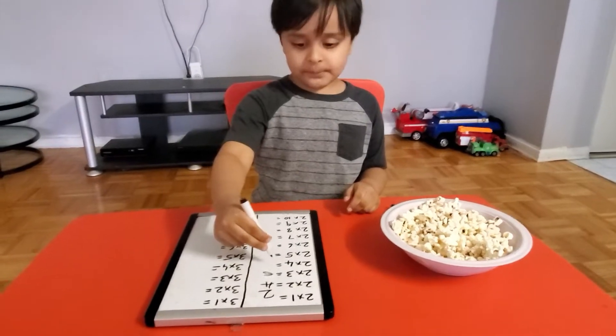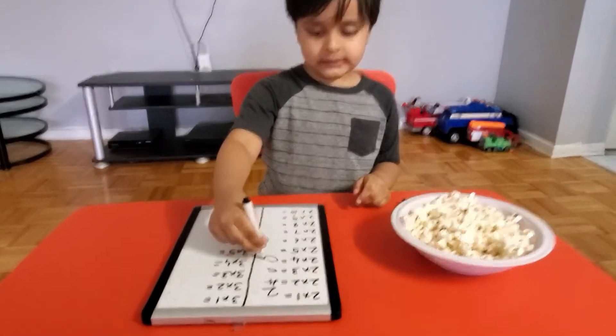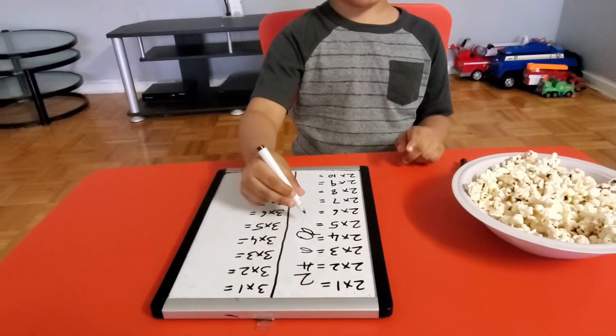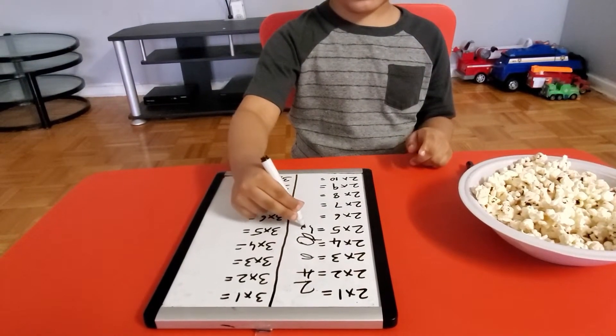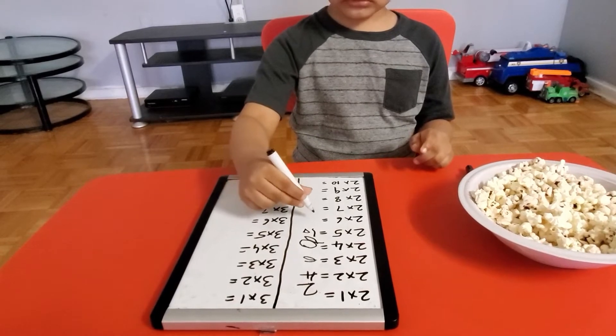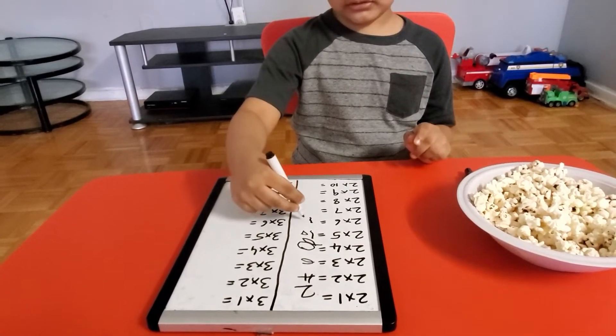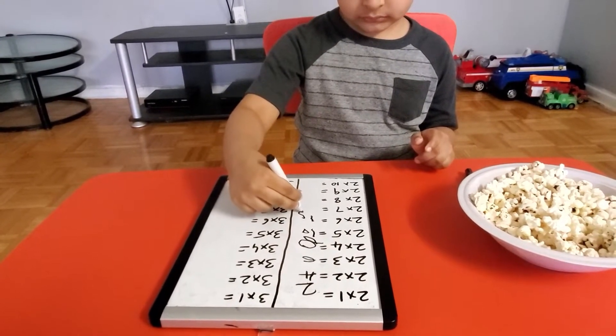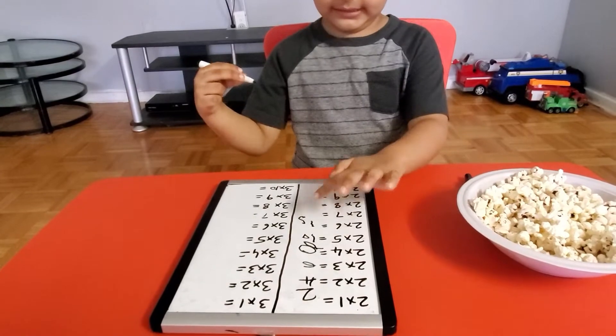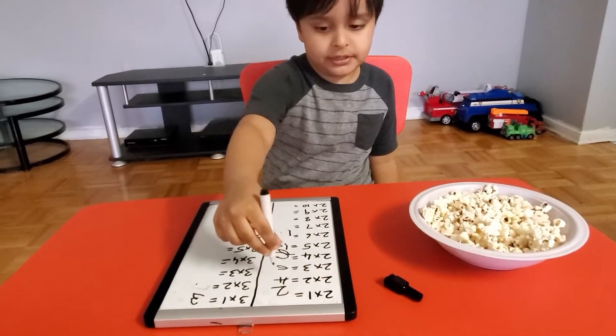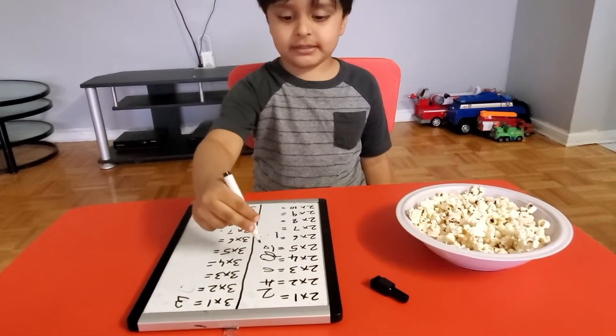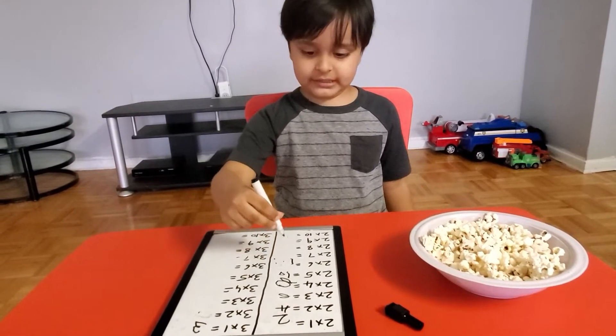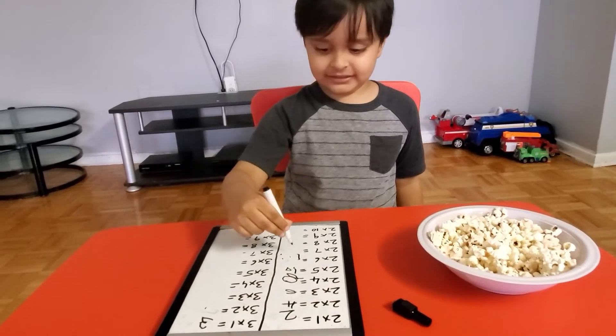I am making the two times table. Two times two equals four. Two times five equals ten. Two times six equals twelve. Wow, you're a genius! I am the mad genius. Two times two equals four. Three times two equals six. Four times two equals eight. Five times two equals ten. Six times two equals twelve.